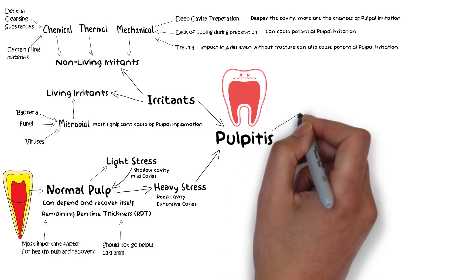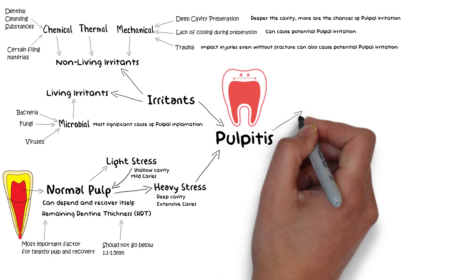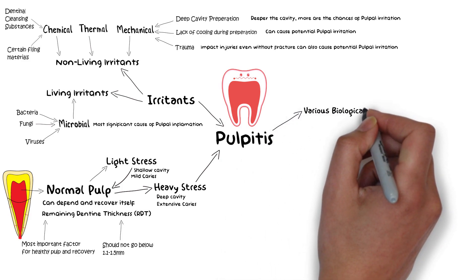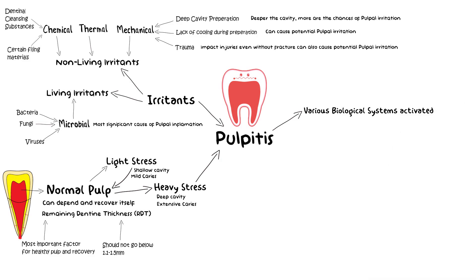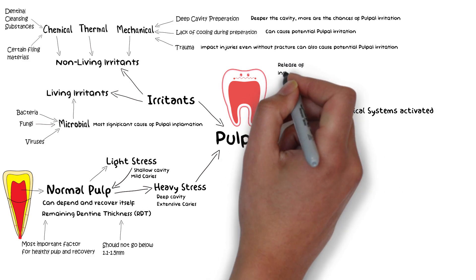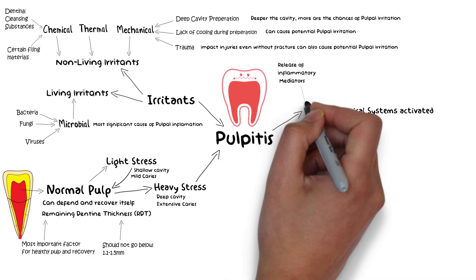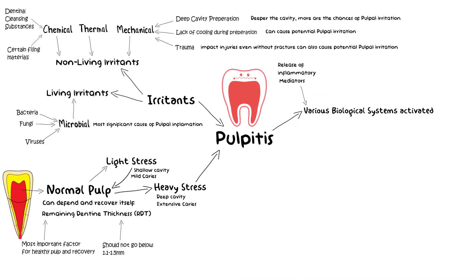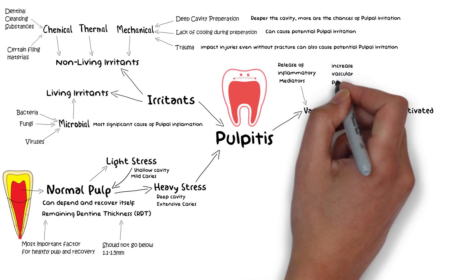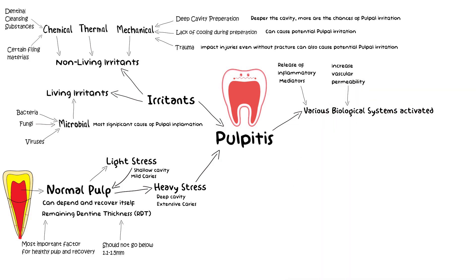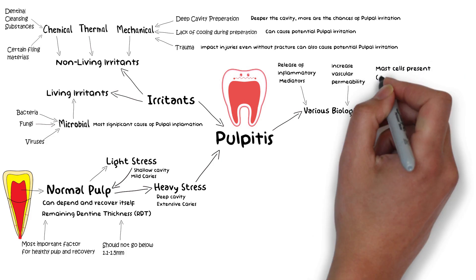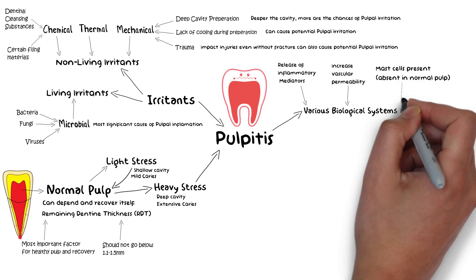Once the pulp is irritated, various biological systems are activated which results in inflammatory mediators like histamine, bradykinin, and arachidonic acid metabolites being released into the pulp. Pulpitis also results in increased vascular permeability and increased migration of leukocytes to the site of injury. Unlike connective tissue in other parts of the body, normal pulp lacks mast cells, but these mast cells are often present in inflamed pulp — a distinction which you need to remember.